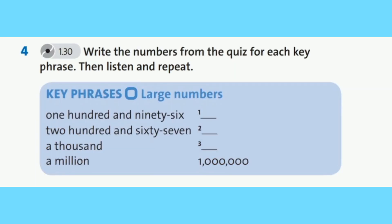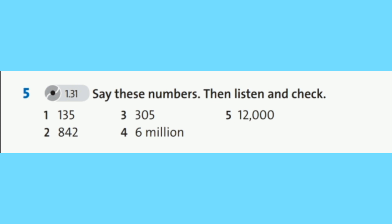The next exercise is number 4. Write the numbers from the quiz for each key phrase. Then listen and repeat. Напиши числа из викторины для каждой ключевой фразы. Затем послушай и проверь. Track 1.30. Vocabulary Exercise 4: 196, 267, 1000, a million.